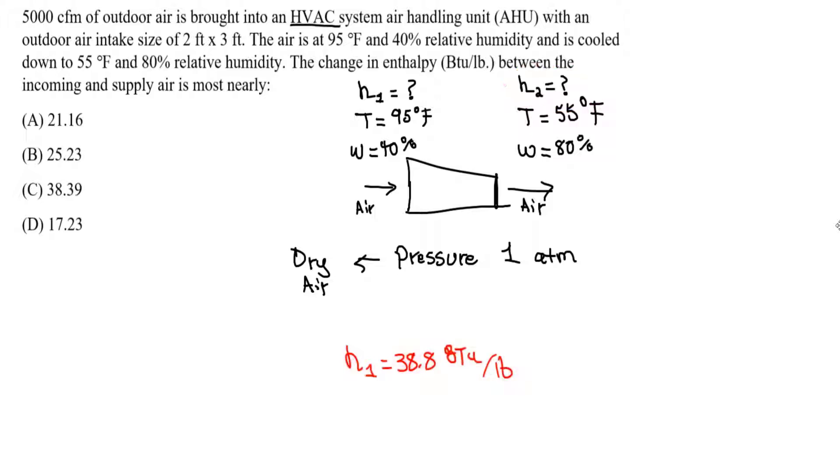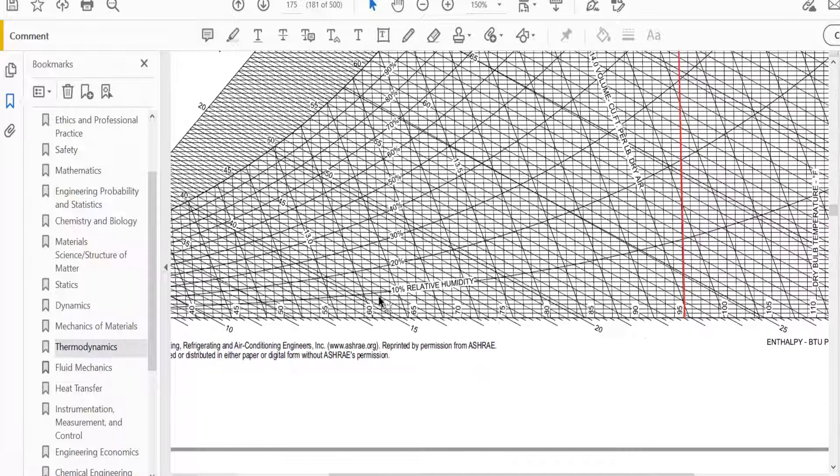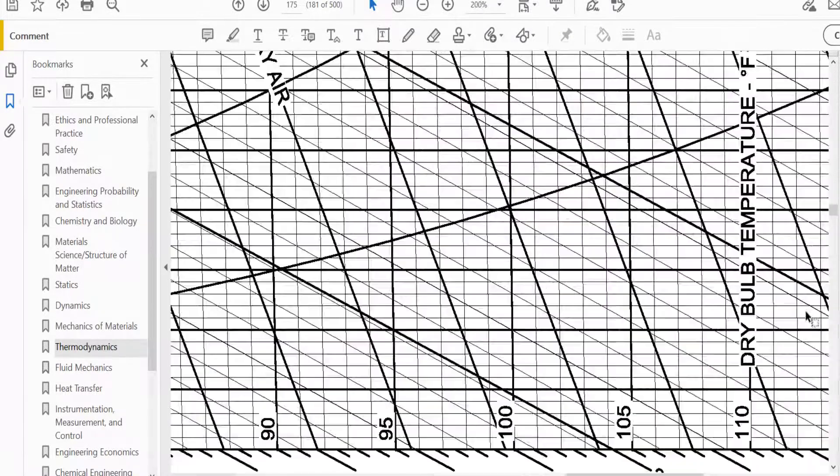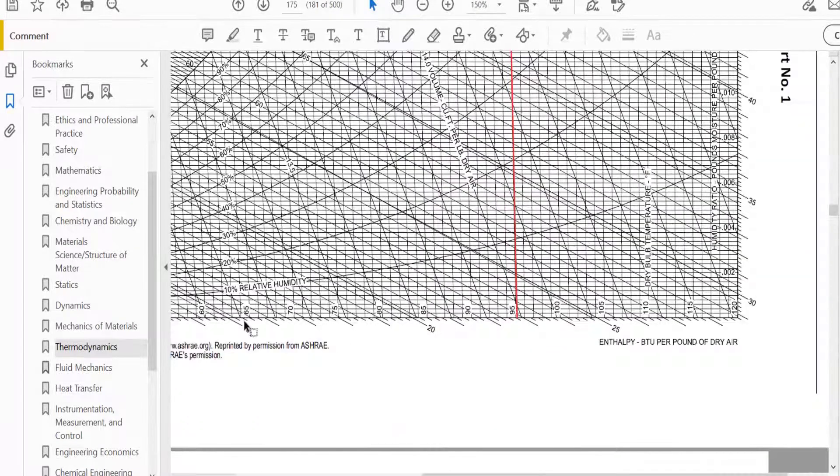Now let's find H2. So same procedure, temperature of 55 degrees Fahrenheit, the omega or W, the relative humidity is 80%. So we go to our chart, we're looking at 55 degrees. Again, this is going to be the dry bulb temperature. So the name is denoted here, the dry bulb temperature, degrees Fahrenheit.